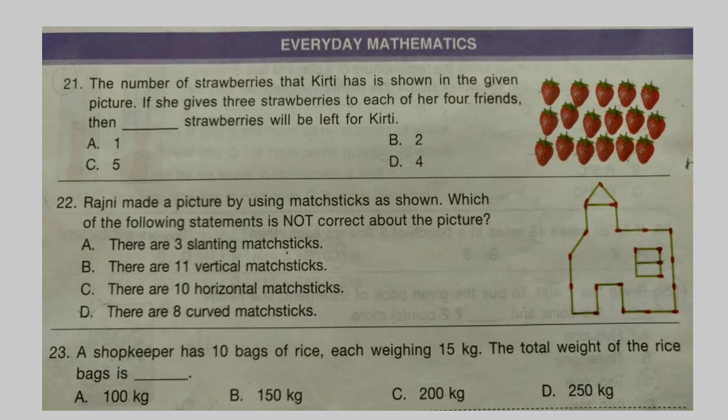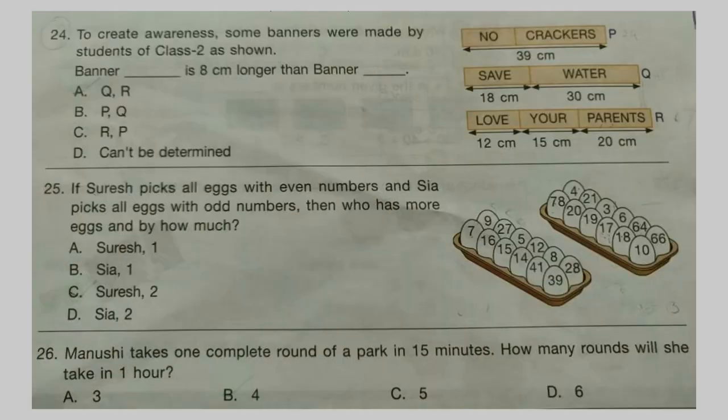Question 23: A shopkeeper has 10 bags of rice, each weighing 15 kg. The total weight of the rice bags is dash. Question 24: To create awareness, some banners were made by students of class 2 as shown. Banner dash is 8 cm longer than banner dash.